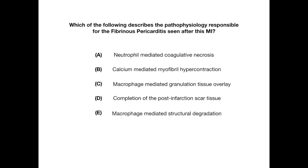The pathophysiology responsible is neutrophil-mediated coagulative necrosis. That neutrophilic substance causes an inflammatory response which causes pericarditis. Remember that anything ending in '-itis' means inflammation, and pericarditis is inflammation of the pericardial sac. It is fibrinous because of this neutrophilic inflammatory cascade.